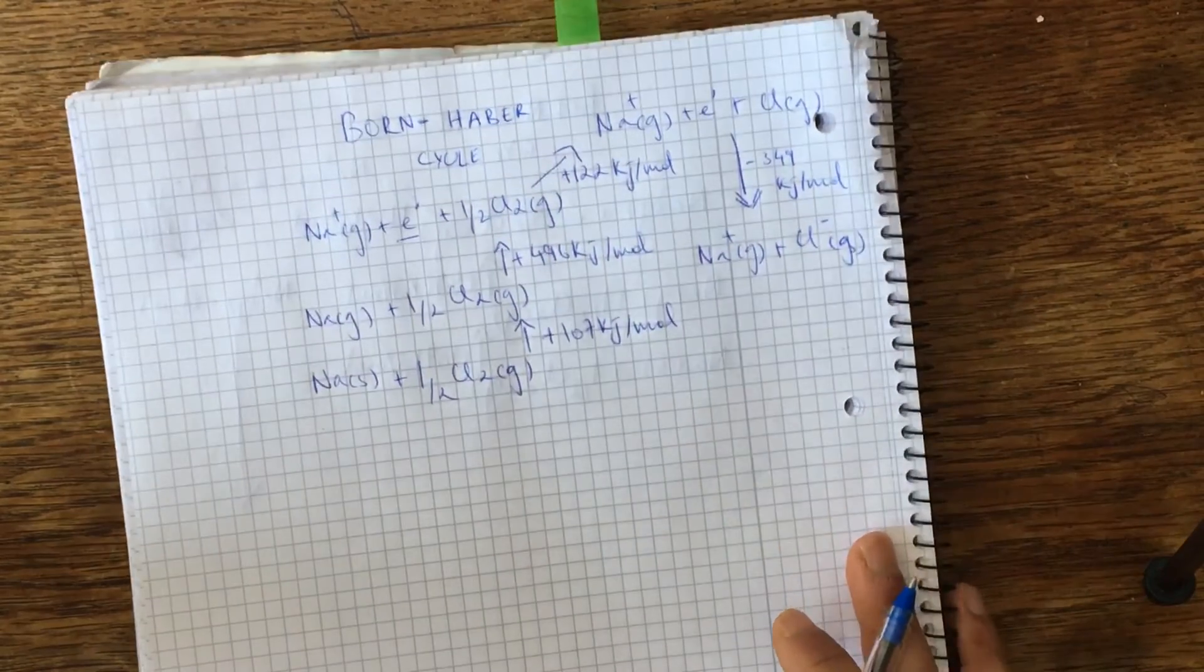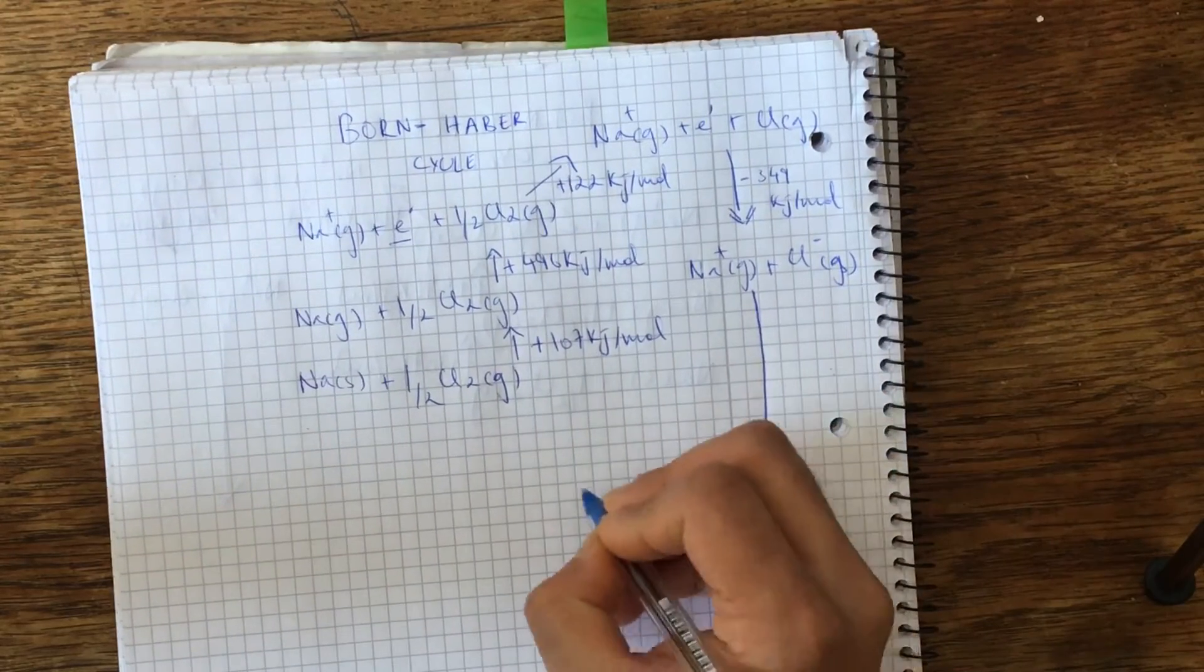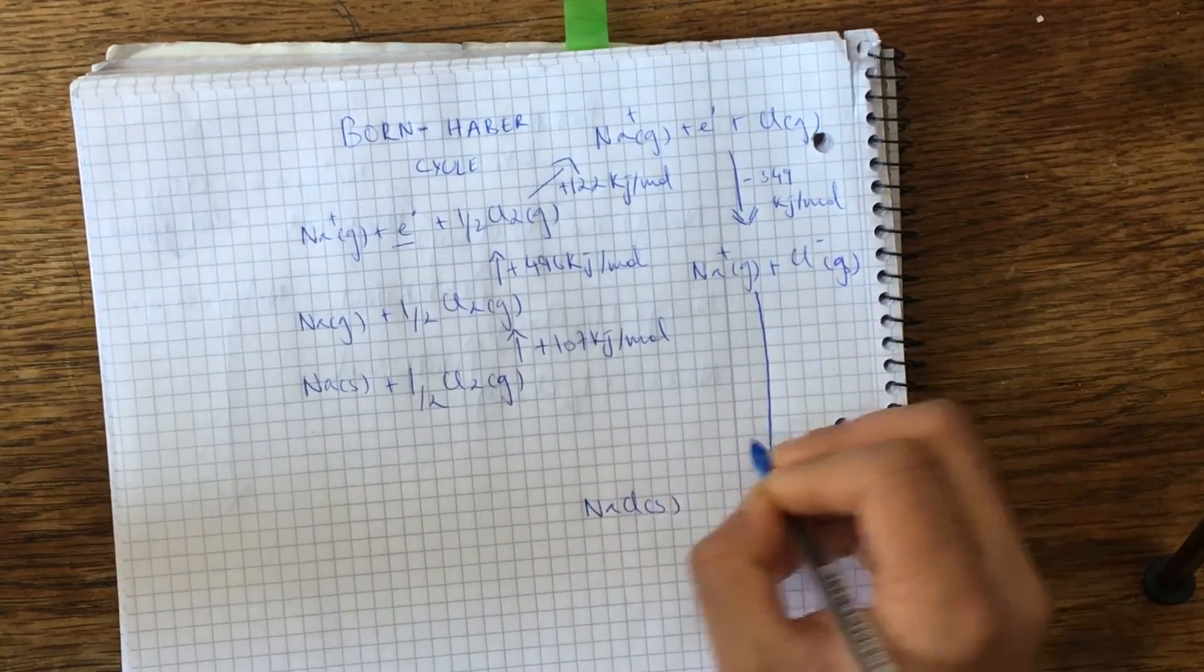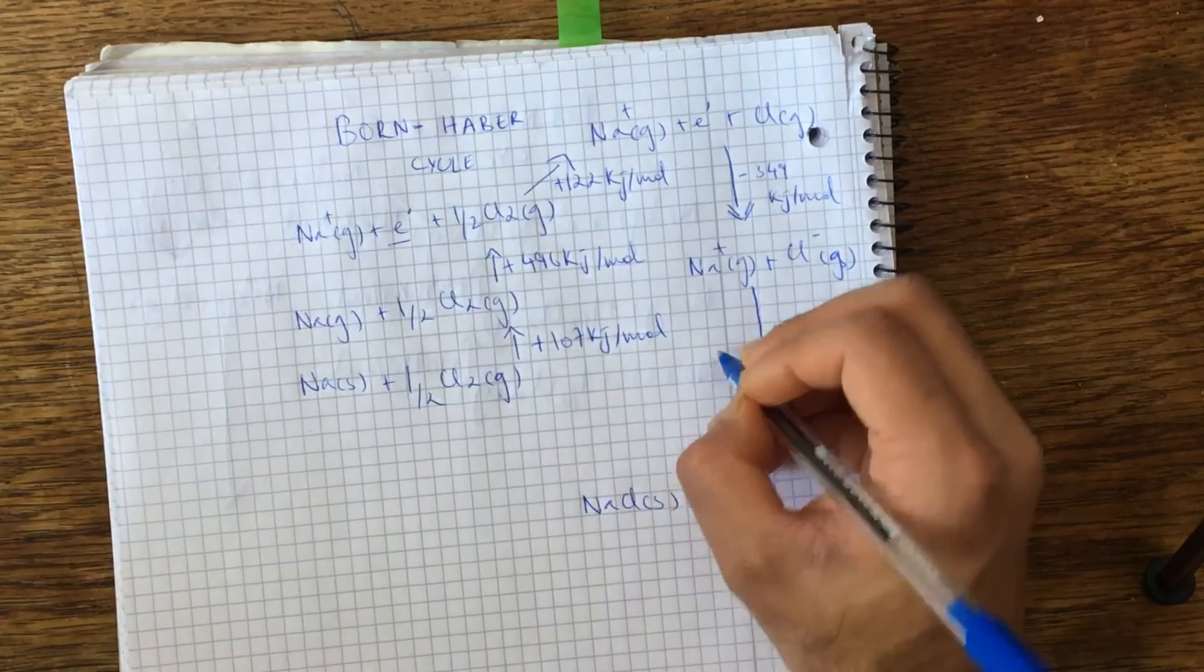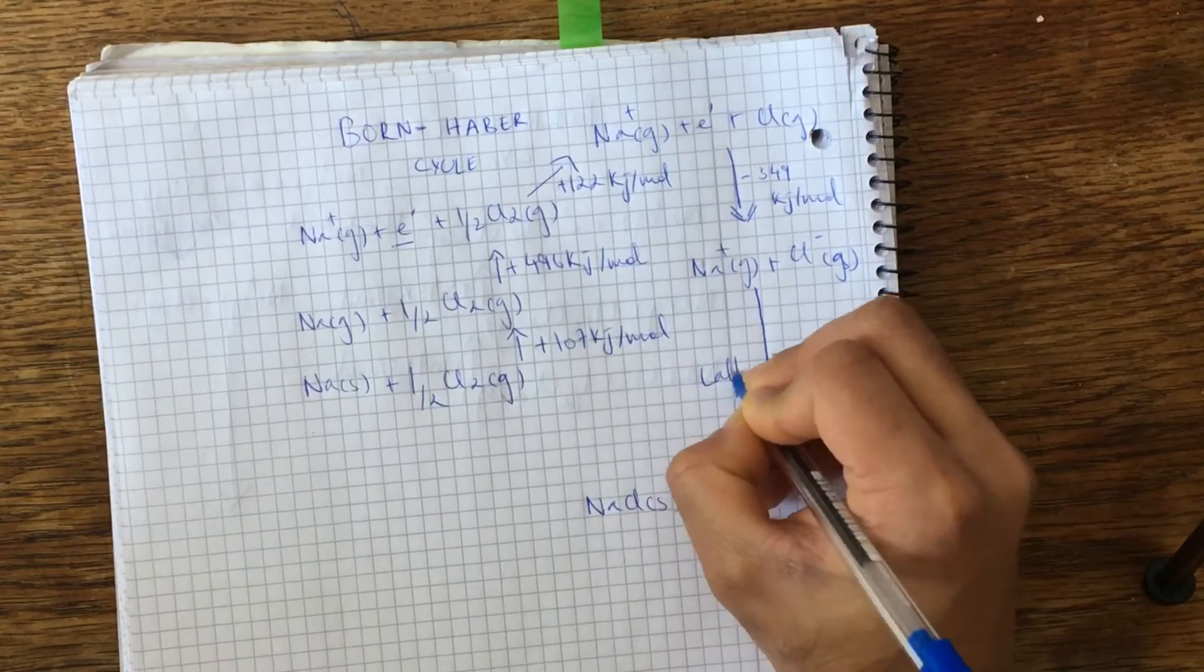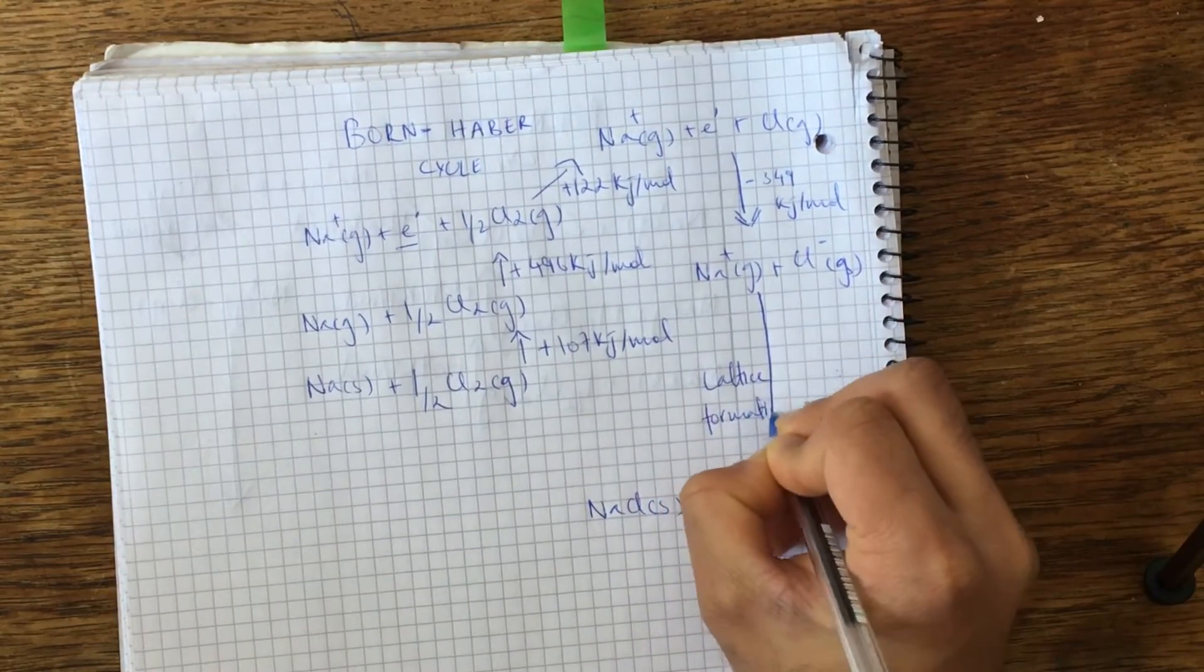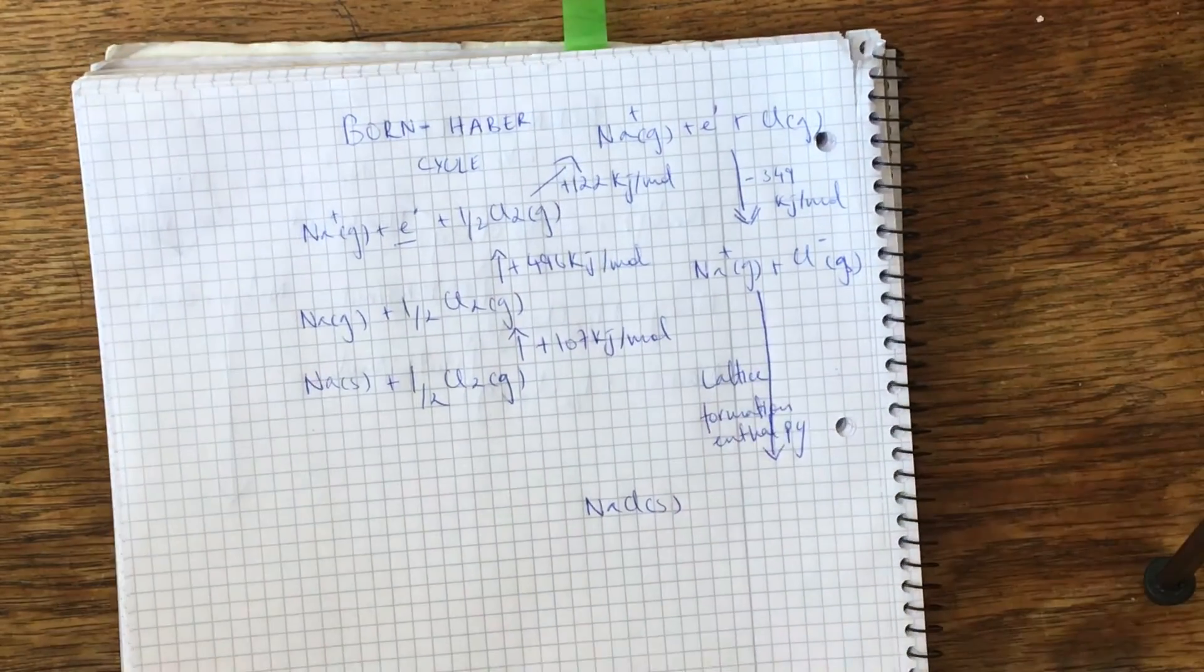And they can now react to form the NaCl crystal. And we need to find out this energy here, which is the lattice formation enthalpy.